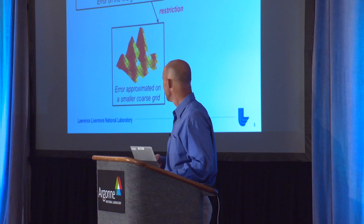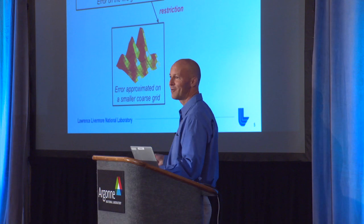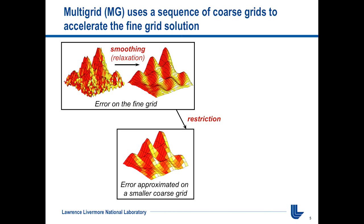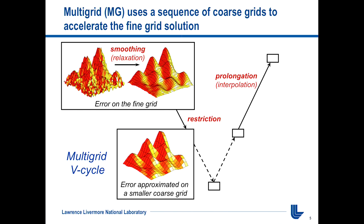For really large problems, this coarser grid is still quite a large system, so we just repeat the idea. You do relaxation again, the underlying error gets smoother still, and you keep going to coarser and coarser grids — often down to just a single degree of freedom or a handful. You solve that and then interpolate the error all the way back up. This is called a V-cycle in multigrid terminology, and it's one of the most commonly used cycling strategies, especially in parallel.